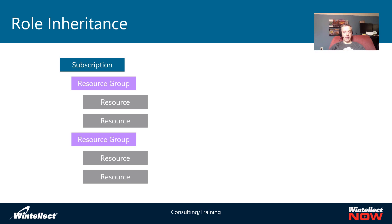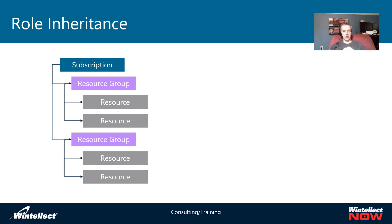However you organize this will largely depend on the application, but understanding role inheritance is important so you can assign the appropriate permissions at the appropriate layer. If you assign something at the subscription layer, everything underneath that is going to inherit it. So if I assign an owner to the subscription, that person is by default the owner of the resource groups and the resources within them. Being careful where you assign roles will have implications on what else gets permissions, so you have to be judicious so you don't create something too broad.